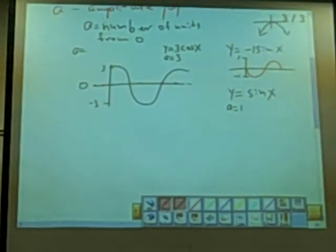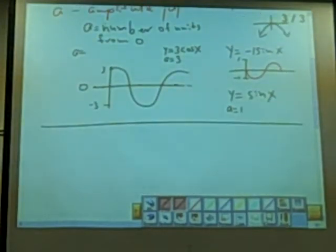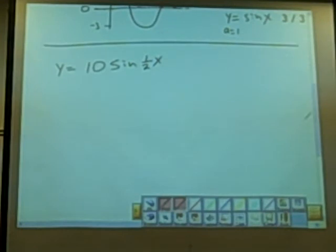Let's say that we have y equals 10 sin 1 half x. If we're looking at our y equals c plus or minus a sin kx, well, do we even have a c in this one? We don't. So that means there's no shifting up or down.